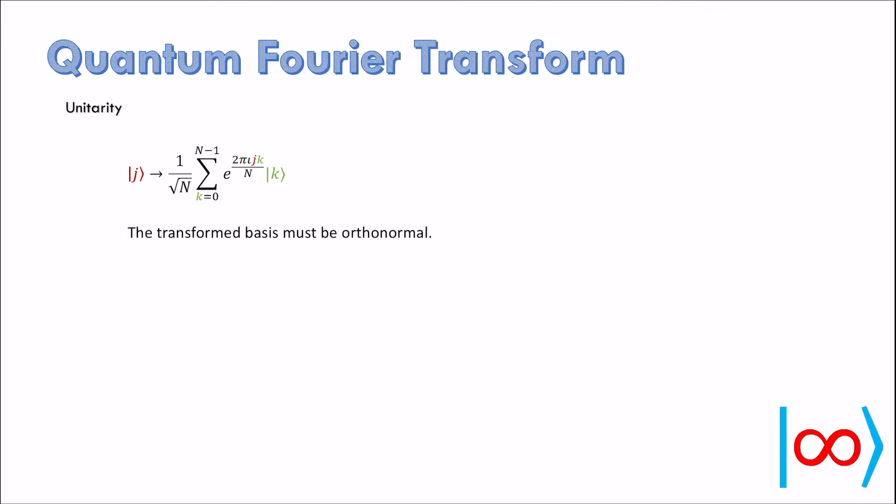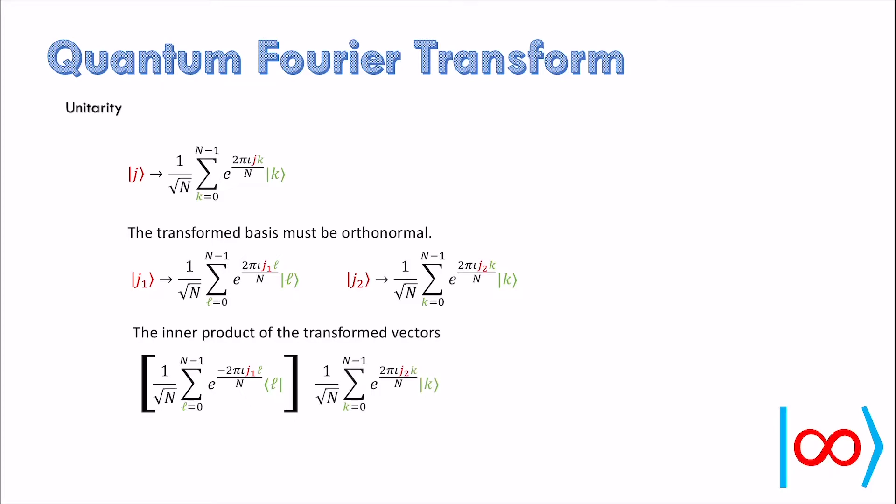To show this, we need to pick any two basis vectors and compute the inner product of the transformed vectors. Say, we pick J1 and J2. Just to be clear, these J1 and J2 are not single bits, these are log N bit numbers. We take the dual state of the first transformed vector and inner product it with the second transformed vector.